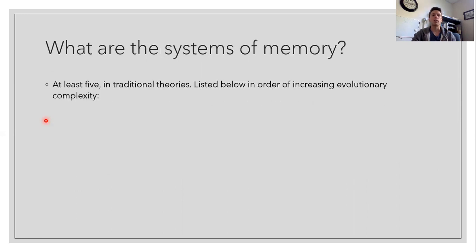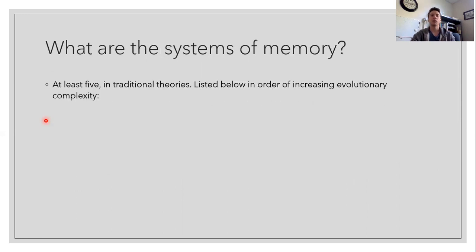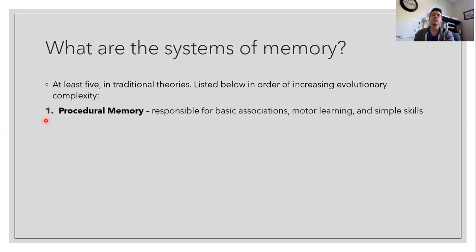So next, what are these systems of memory? Well, there's at least five under traditional theories, and below I list these in order of increasing evolutionary complexity. So first we have procedural memories.